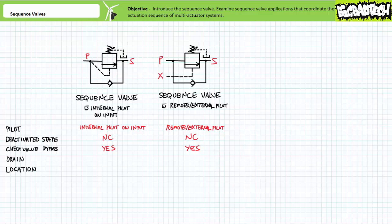Customarily, the primary or input port on a sequence valve is labeled P for pressure, and the output or secondary port is labeled S for sequence. If the sequence valve uses an external pilot port, let's call it port X. Sequence valves ordinarily include a check valve bypass because they're employed in regions with bidirectional flow paths. The check valve bypass allows the sequence valve to control pressure in one direction and be bypassed in another. If the sequence valve does not include a check valve bypass internal to the valve enclosure, a separate external check valve must be employed. Sequence valves require an external drain since their output port is pressurized. External drains are symbolized by a dotted connection to tank, and the drain port is customarily labeled D.